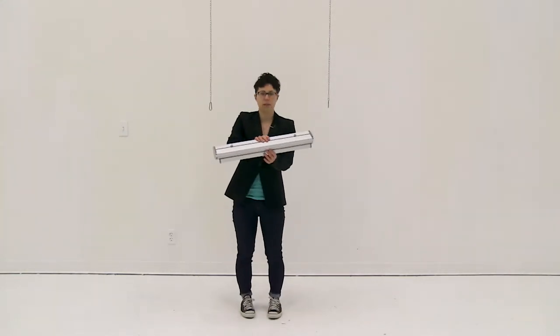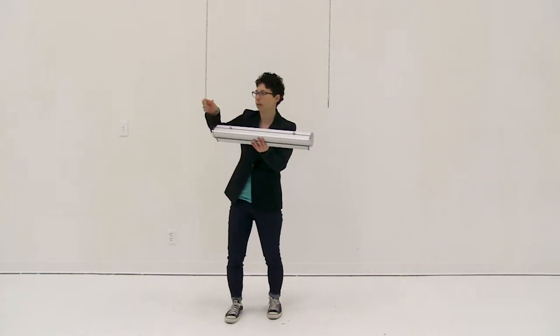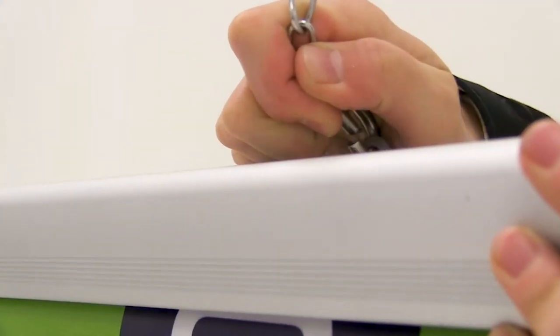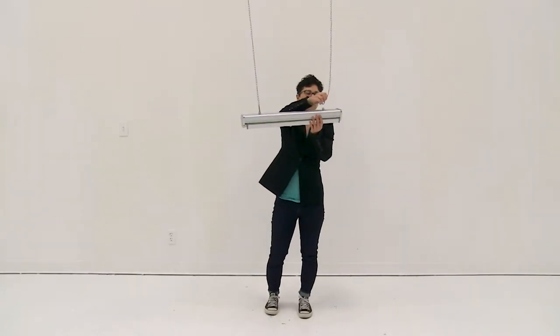Located on the base of the retractor there are two loops that you can insert hanging hardware in. I'm just going to clip in my hanging hardware. Note that hanging hardware is not included with the inversion retractor.